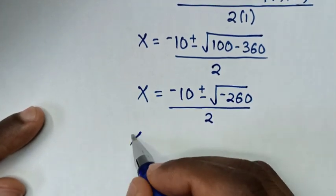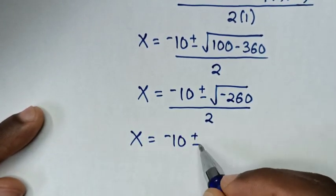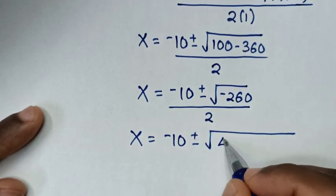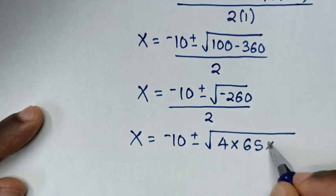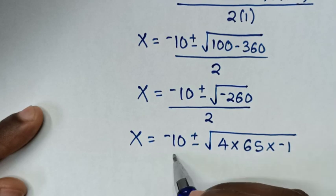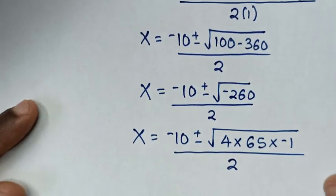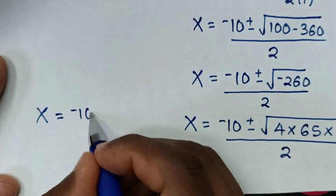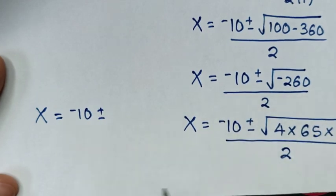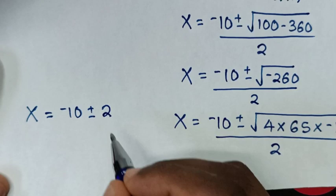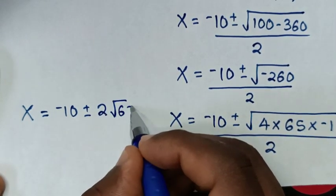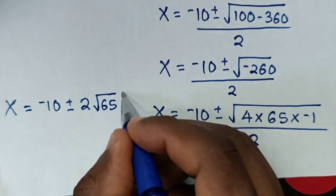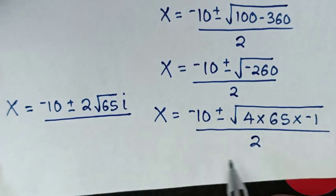In the next step, √(-260) = √(4 × 65 × (-1)) = 2√65 × i. So x = (-10 ± 2√65 · i) / 2.